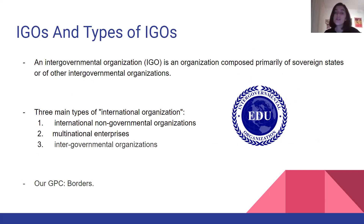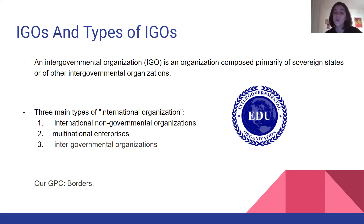So IGOs and types of IGOs. What is an IGO? An IGO is an intergovernmental organization composed primarily of sovereign states or of other intergovernmental organizations. IGOs are established by a treaty that acts as a charter creating the group. These treaties are formed when lawful representatives of several states go through a ratification process, providing the IGOs an international legal personality. There are three main types of international organizations: international non-governmental organizations, multinational enterprises, and intergovernmental organizations.